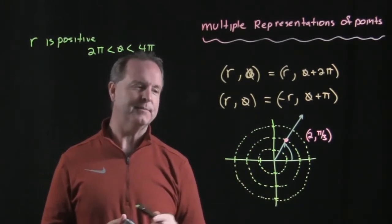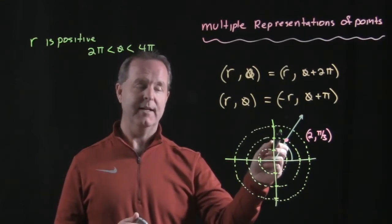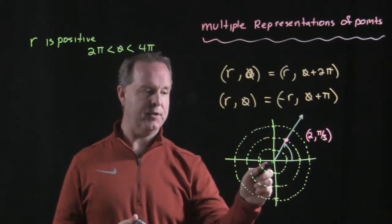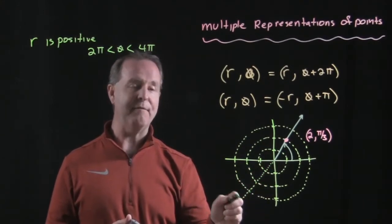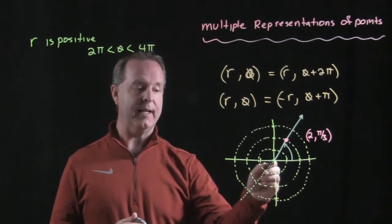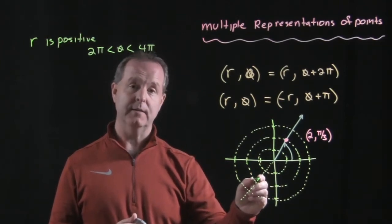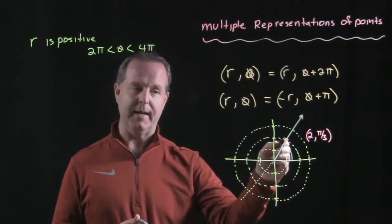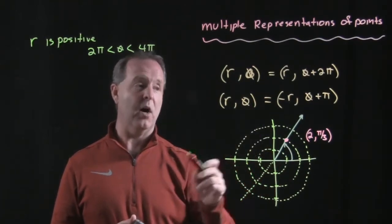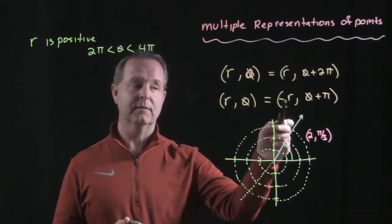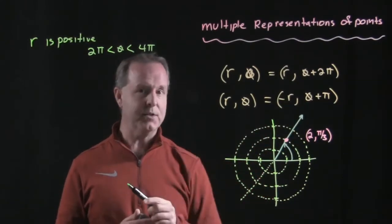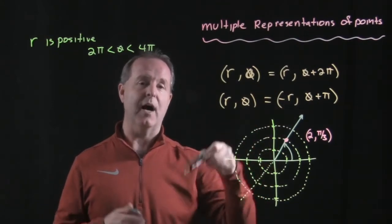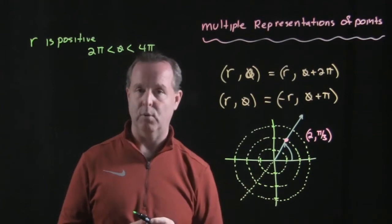Another way I can represent this point is imagine that I went π around and came out this direction. Instead of going in the positive direction, I go in the negative direction and wind right back up at that original point. So (r, θ) can also look like (-r, θ + π), not 2π, but just 180 degrees. Since my radius is in the opposite direction, I wind back up at that same point.